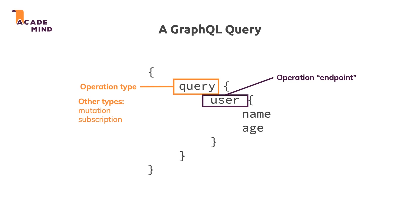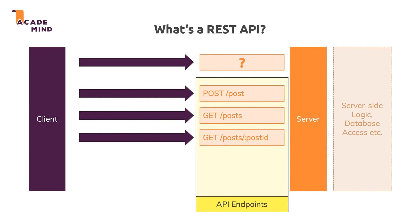Last but not least, in your query you also specify which fields you want to get back for that specific data. That's one of the huge advantages of GraphQL compared to REST APIs. With a REST API you target a specific resource — for example GET /posts — and retrieve all posts with all their fields: the ID, title, description, and so on. You might use query parameters for pagination, but often you end up fetching more data than you're interested in.